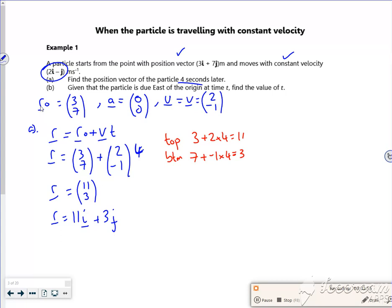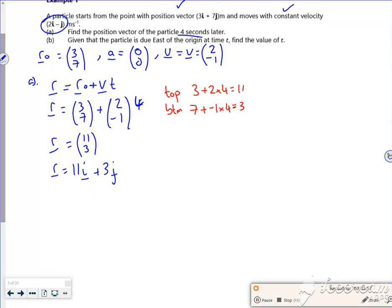Keep an eye on the clock now. So given that the particle is due east, so as it says, given the particle is due east of the origin at time t, find the value of t. Now people kind of get quite messed up with this. So if you imagine if something is due east of it, so there's east, the j component of its displacement is zero. So you're kind of happy with that? The j component is zero. So j component of its displacement is zero.